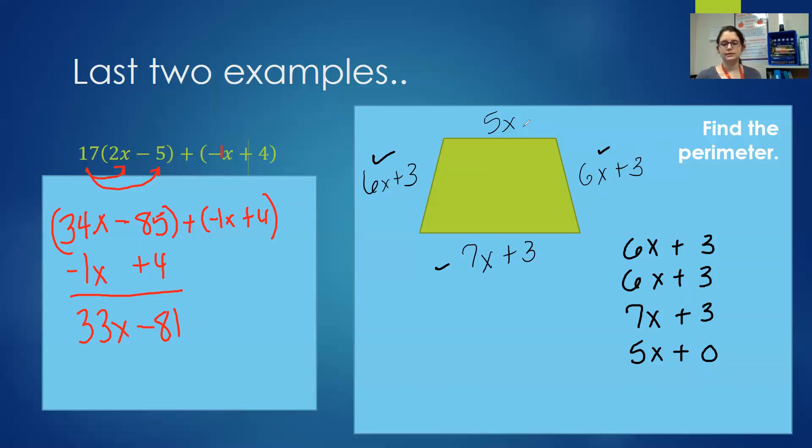Because there's no constant but adding 0 doesn't change. 6 plus 6 is 12. 12 plus 7 is 19. 19 plus 5 is 24. So our perimeter would be 24x plus 9. We can't find a specific number until we are given what x equals. And then we can substitute and solve.